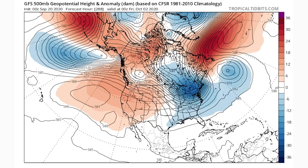First things first, we're taking a look at our 500 millibar geopotential height on the GFS model. Red is associated with high pressure and blue is associated with lower pressure and lower temperatures. This is a very classic pattern — what we call a positive PNA, negative NAO pattern — and it really always leads to a strong trough in the east. Nine times out of ten this leads to very cold temperatures out there in the east. This is the GFS for October 2nd, showing a ridge in the west, a ridge south of Greenland, and sure enough a very strong trough in the east.